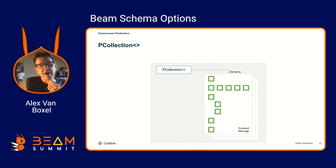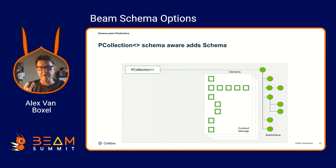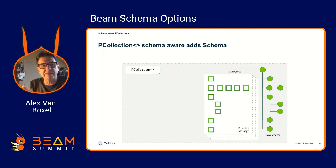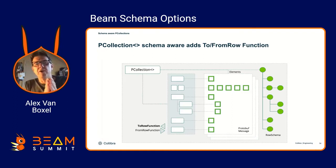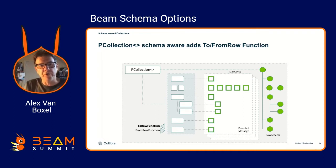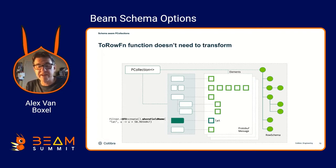Schema-aware PCollections gave some extra capability: universally understood type information within the Beam ecosystem. It was a layer on top of the original type. For Proto, it made sure Beam could understand what those fields are instead of just working with the messages. Same for Avro, POJO, JSON, or whatever.